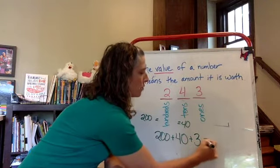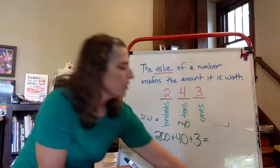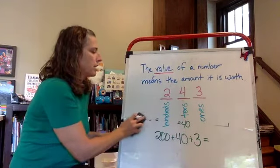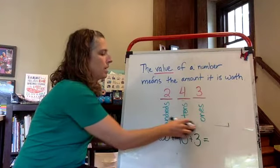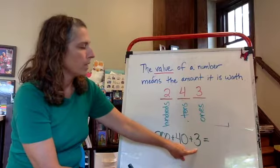So if I wanted to write 243 in expanded form, it would look like—let me just erase these so it's not as confusing—it would look like 200 plus 40 plus 3.